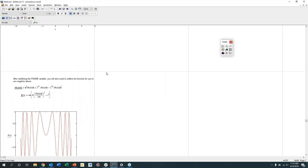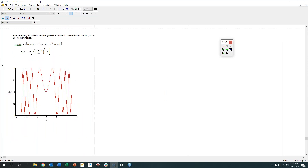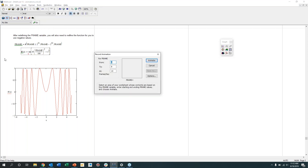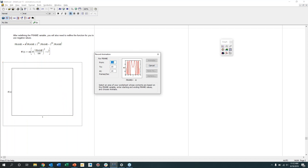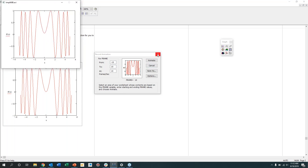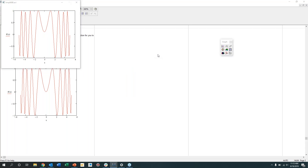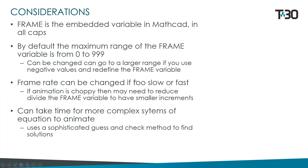If you want to use negative values in the FRAME variable, you just have to redefine the FRAME variable as shown here. You go down, redefine the FRAME variable and the function, then go again to Tools, Animation, Record, highlight what you want to record, and set the range — for example, minus 10 to 10. You can see it's animating with negative values. Another consideration: if you have very complex systems, such as that five-member pendulum, animating can take a considerable amount of time — potentially on the order of hours.